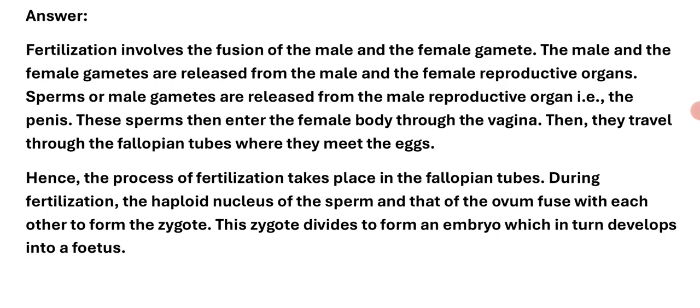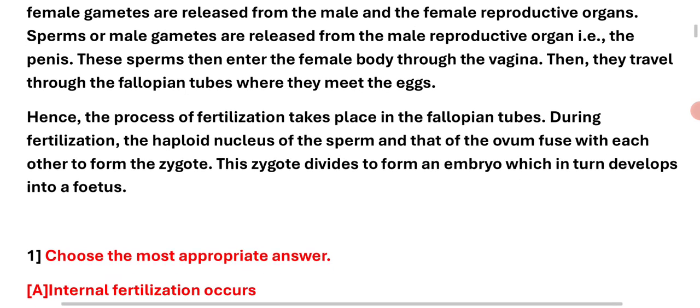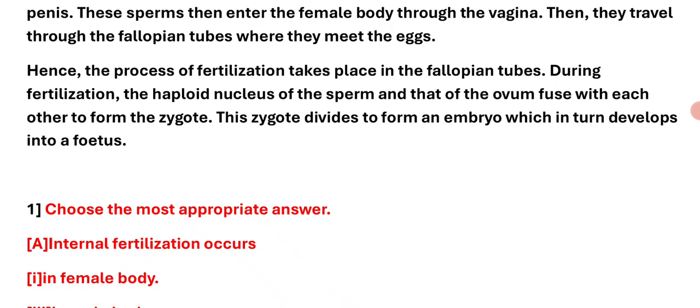These sperms then enter the female body through the vagina, then they travel through the fallopian tubes where they meet the egg. Hence, the process of fertilization takes place in the fallopian tubes. During fertilization, the haploid nucleus of the sperm and that of the ovum fuse with each other to form the zygote. This zygote divides to form an embryo, which in turn develops into a fetus.